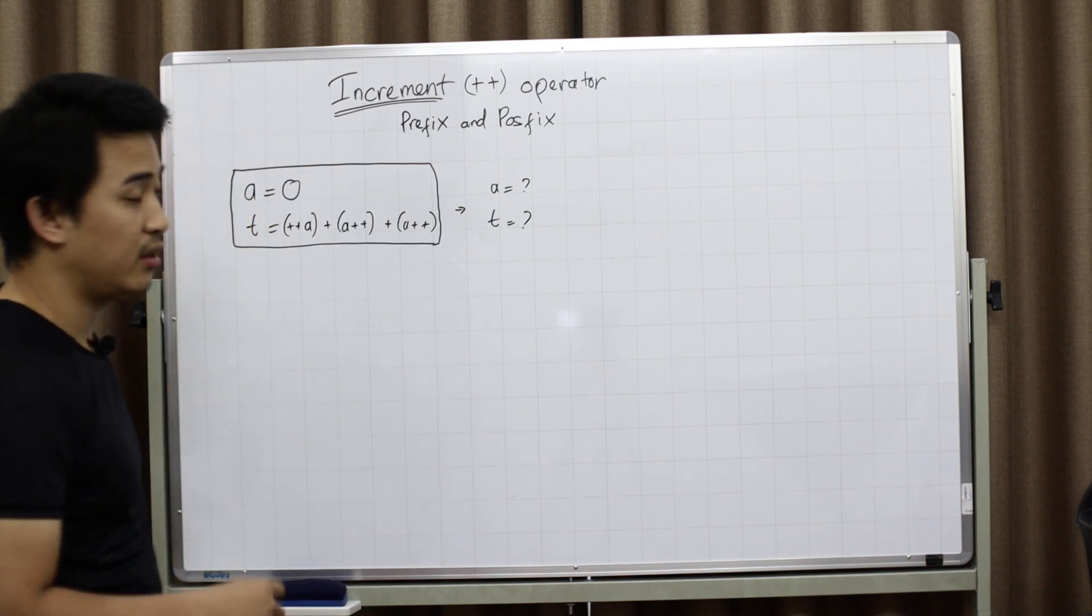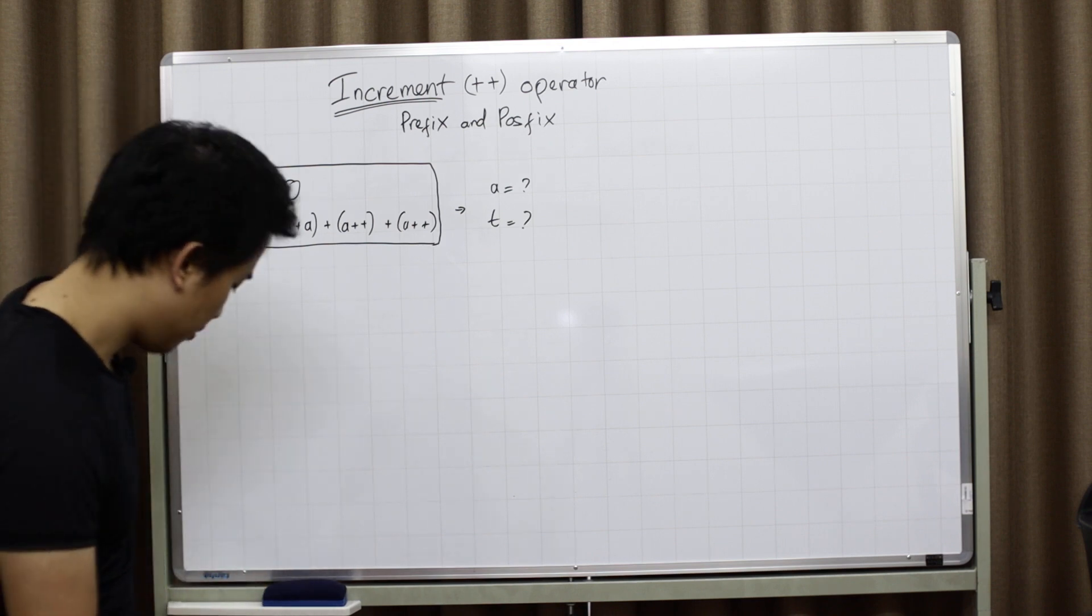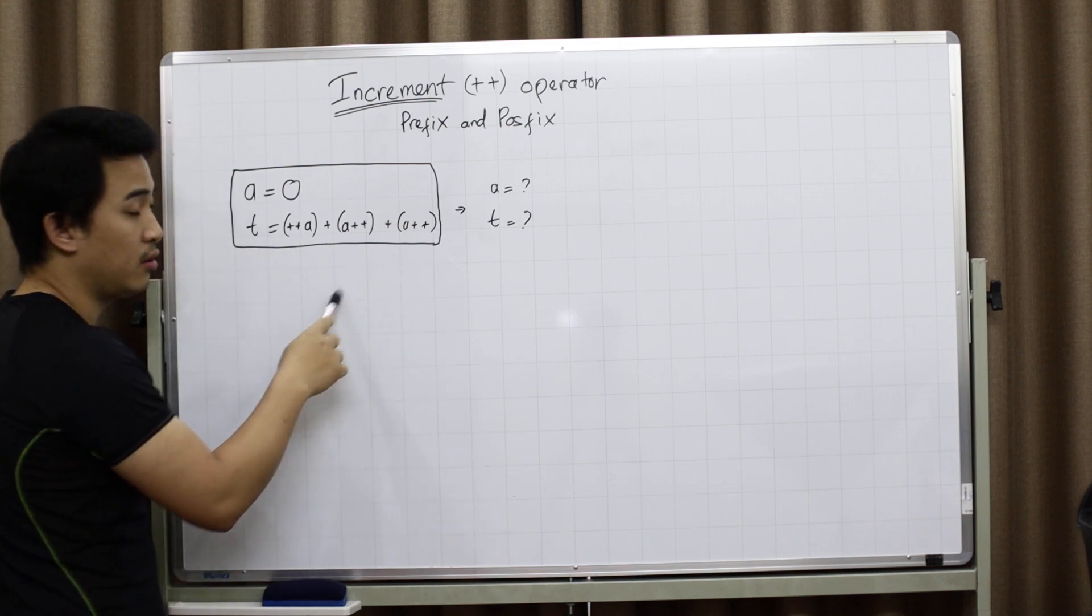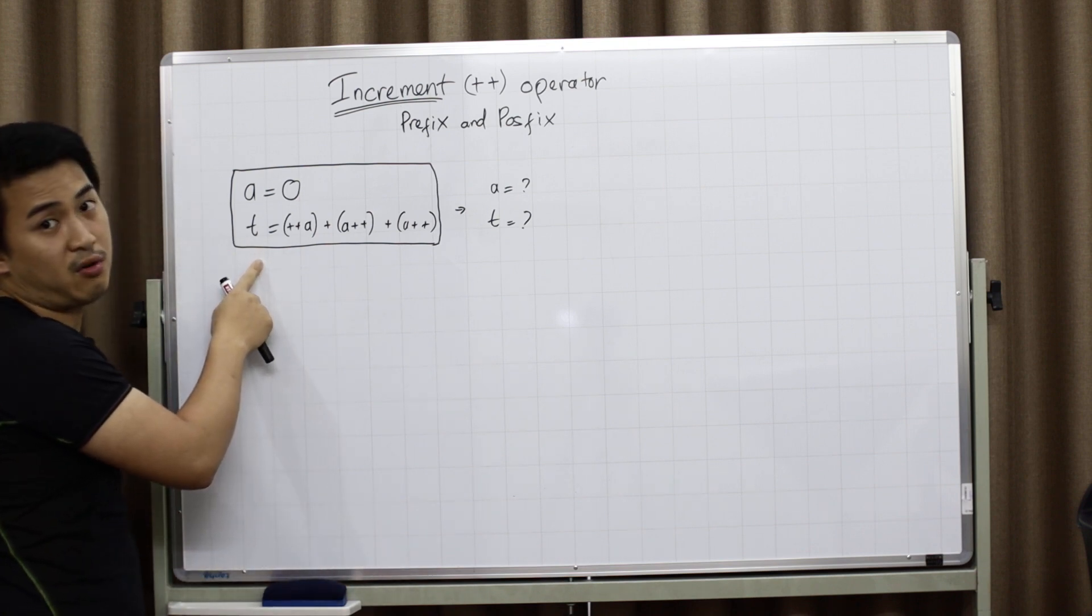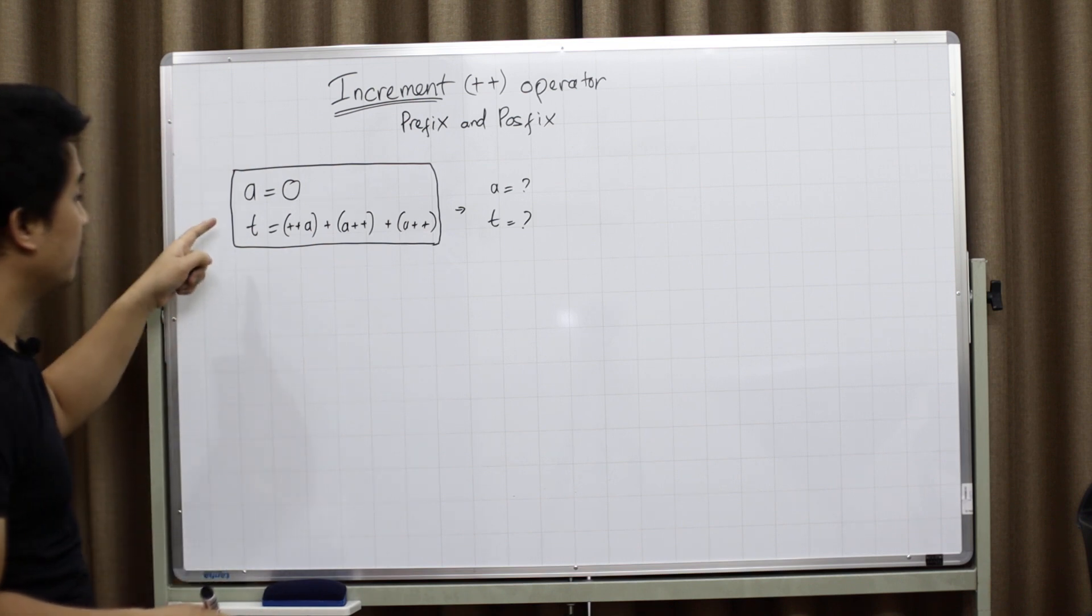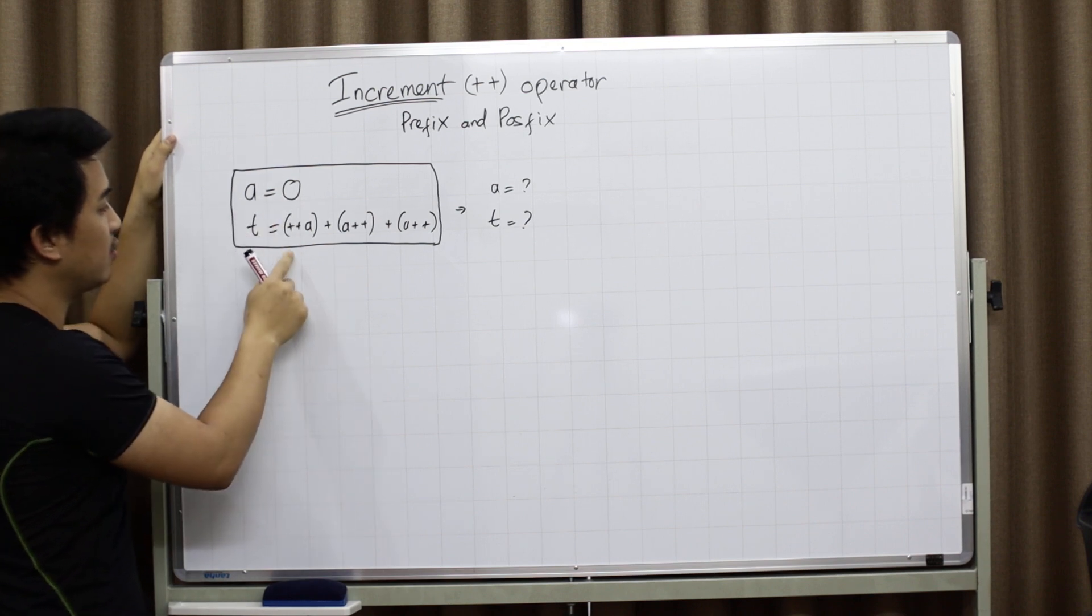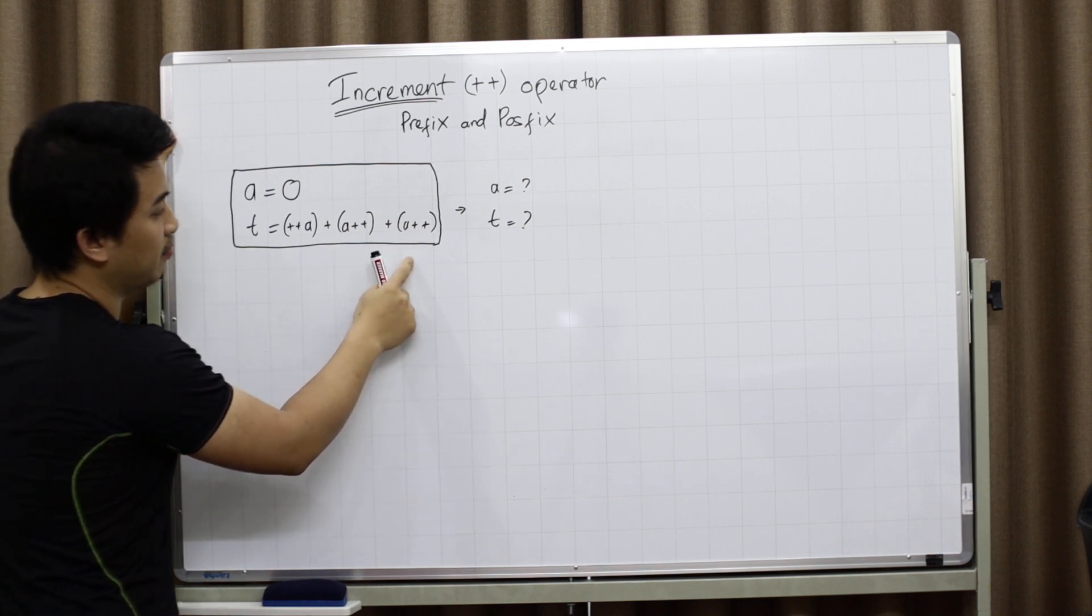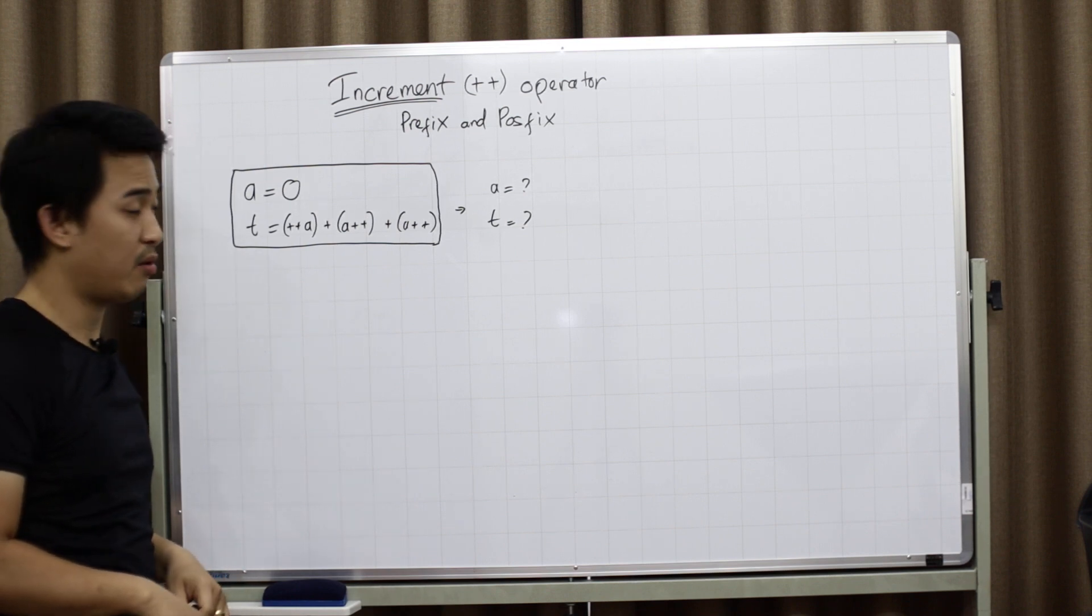It is the increment and decrement operator, the postfix and prefix. So if you already know how this calculation works, you're happy to skip because I have this—I guess it's wrong. So the calculation is a equals 0, t equals ++a + a++ + a++. So before, I would do like this because this is a prefix operator so I will calculate it first.